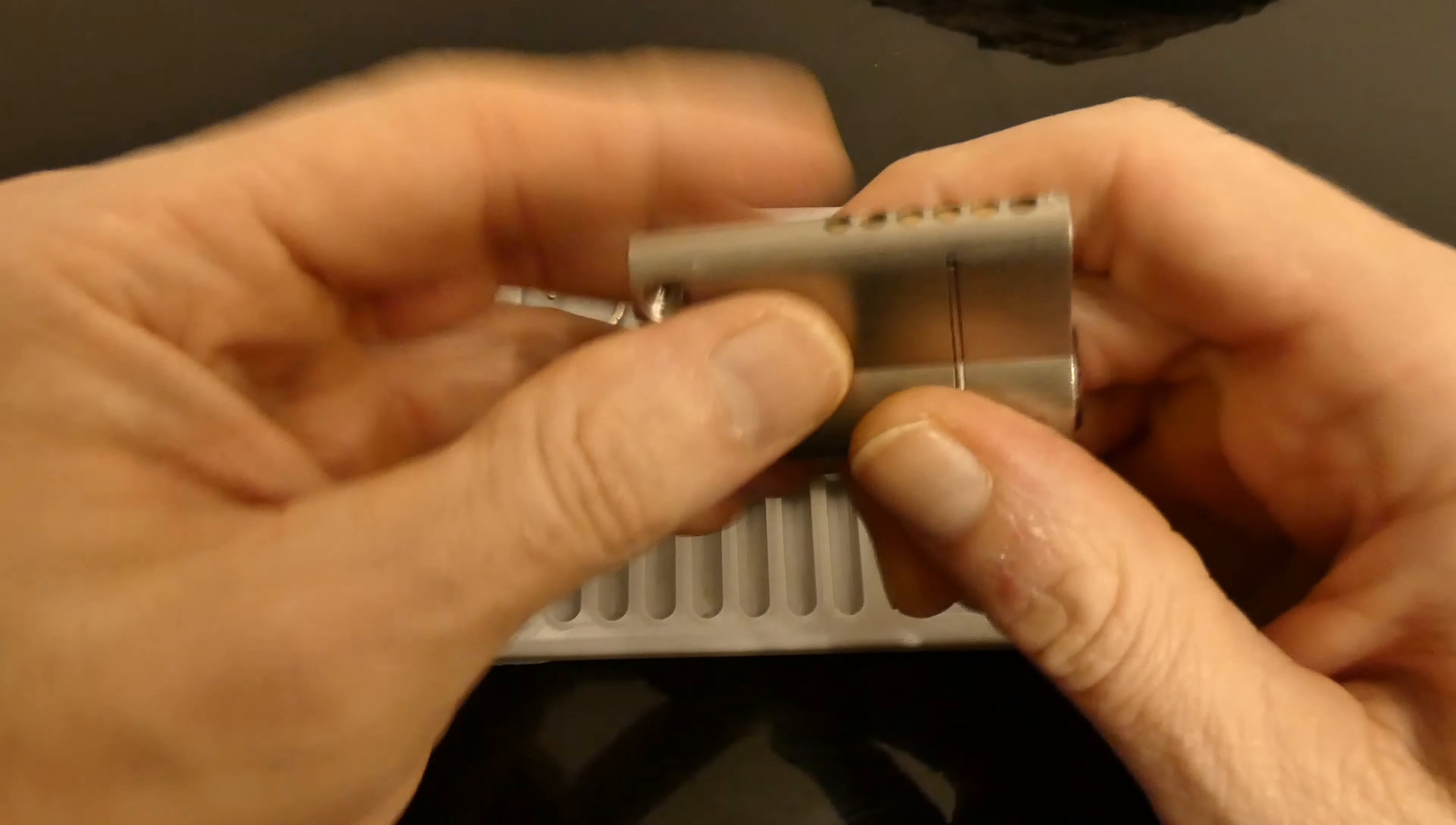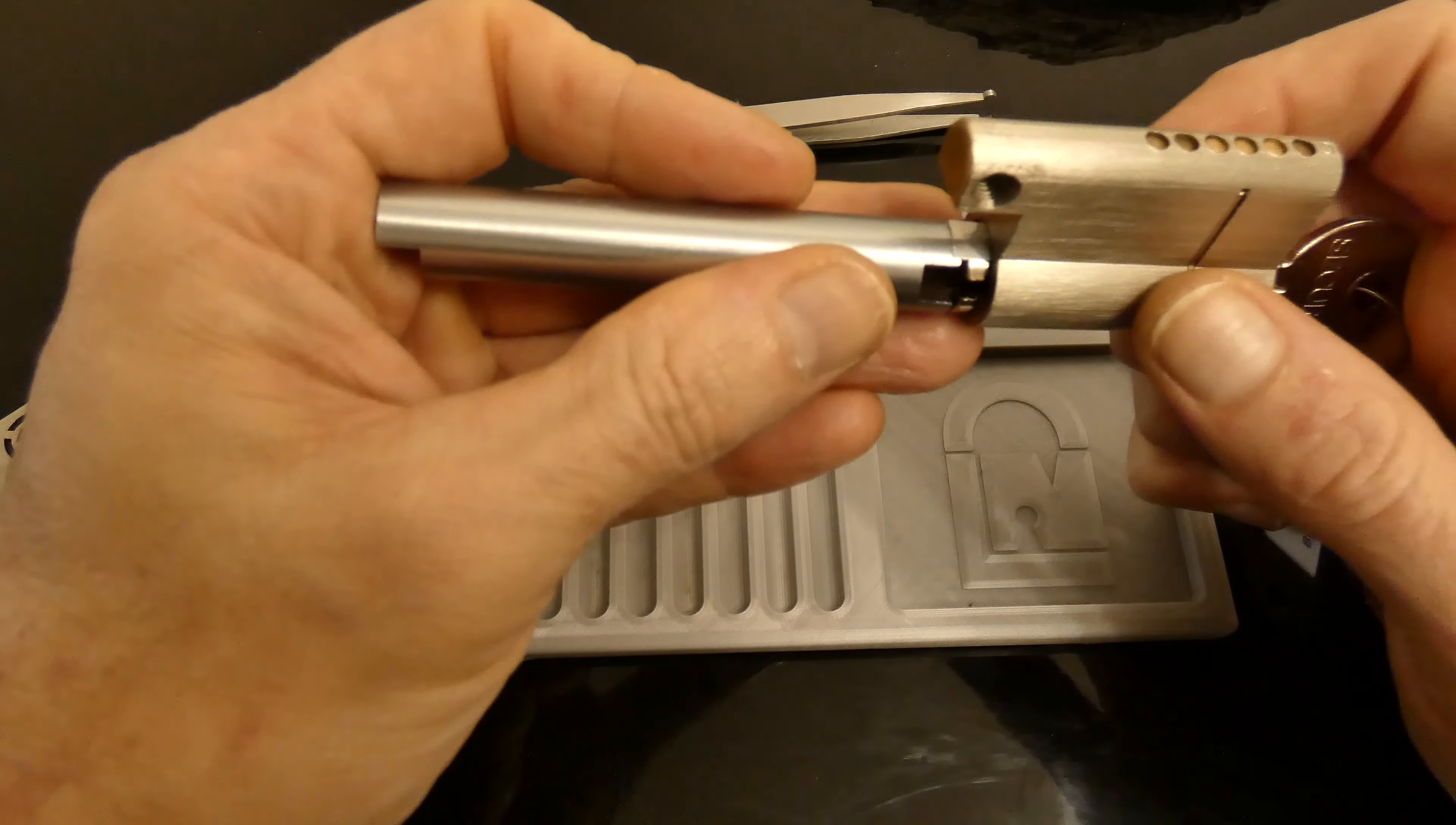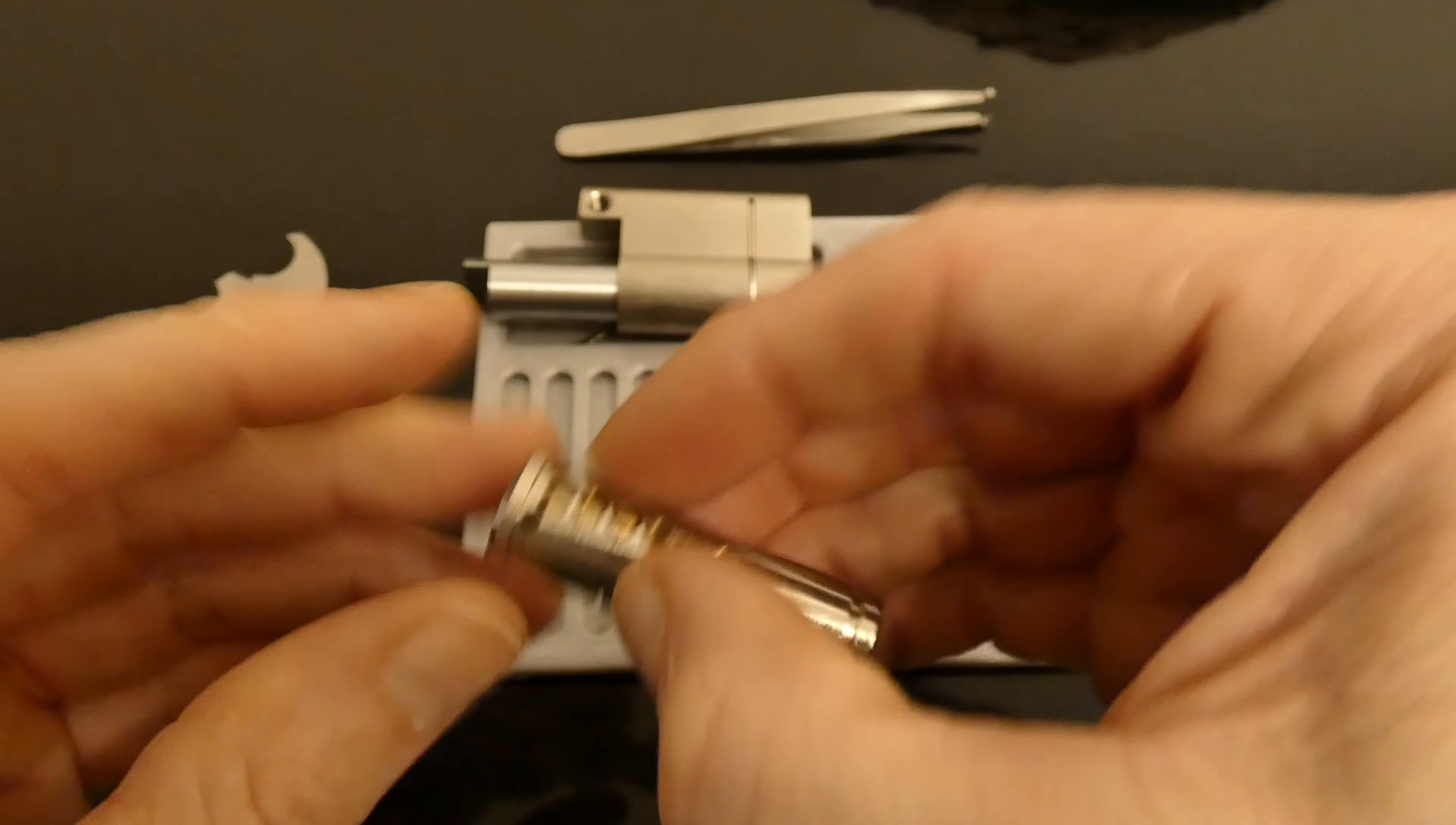These are probably the hardest part of lockpicking—getting those clips off. So, shim in, follower. Okay, so there's the key pins. Let's dump these out.